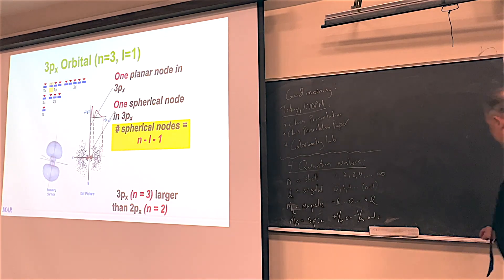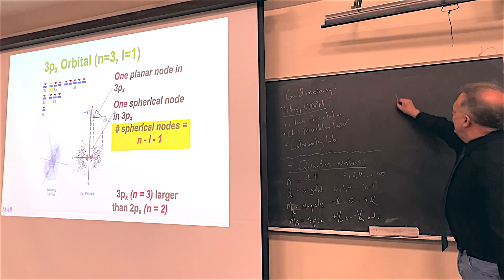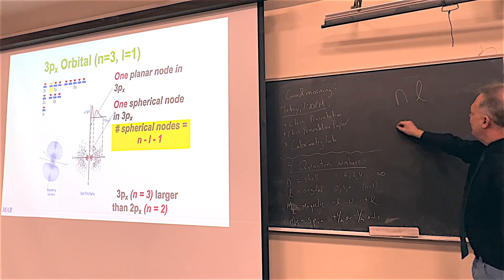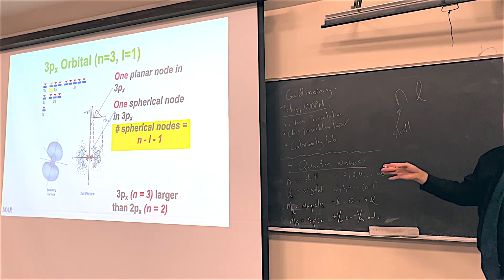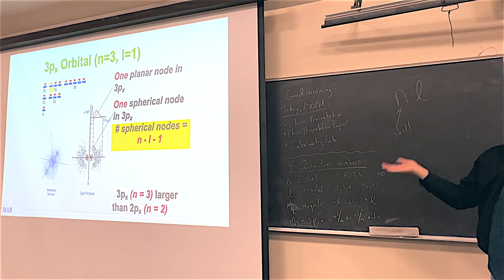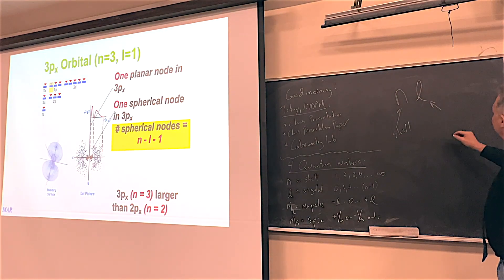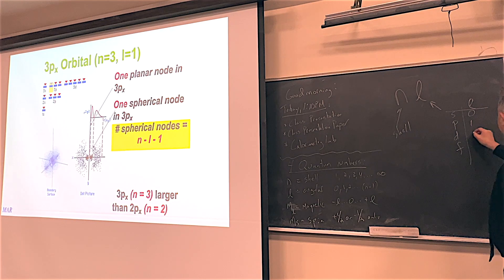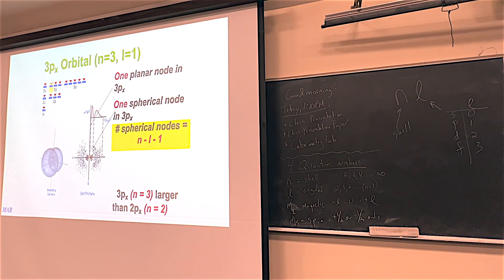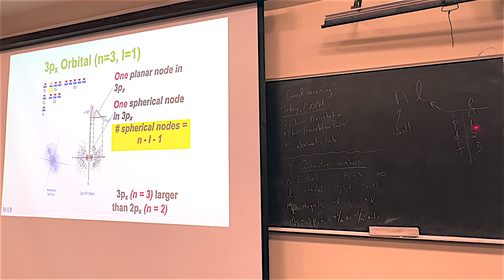When you see things like 3P or 2S, that's what they call the NL notation. N is literally the shell number. So for 3P, N would be three because that's the number inside. L gets a little letter associated with it, and the most important ones are S, P, D, F — corresponding to L values of 0, 1, 2, and 3. For a 3P orbital, N equals 3 because that's the big number in front, and P always means L equals 1.